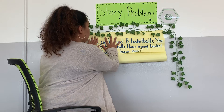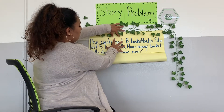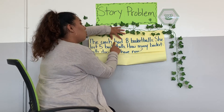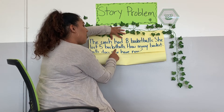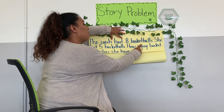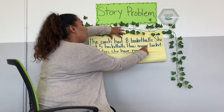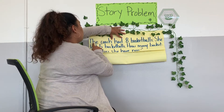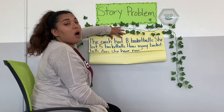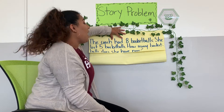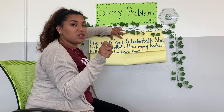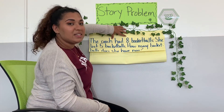So let's see what happens now with another column. Let's go ahead and read it. The coach had eight basketballs. She lost five basketballs. How many basketballs does she have now? The coach had eight basketballs. She lost five basketballs. How many basketballs does she have now? One more time: the coach had eight basketballs, she lost five basketballs, how many basketballs does she have now? All right, friends. It's time to get to work and show your work super neat, making sure that you're writing out your answer. I'm really looking forward to seeing your answers in a circle. Have an amazing day. Bye!